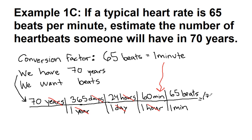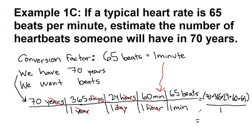So we compute 70 times 365 times 24 times 60 times 65, all over 1 times 1 times 1 times 1 — so there's nothing to divide. Our calculator gives us 2,391,480,000.